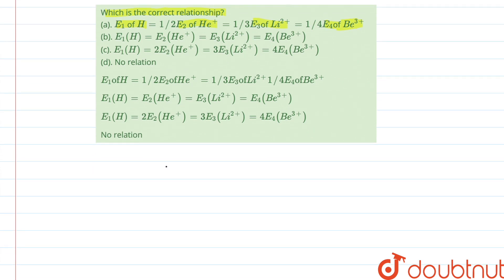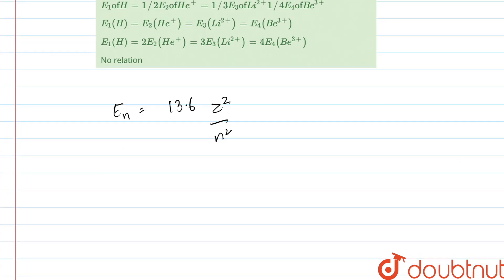The energy of the nth orbital or Bohr orbit is 13.6 z squared upon n squared. All of these En's would be equal when z is equal to n.